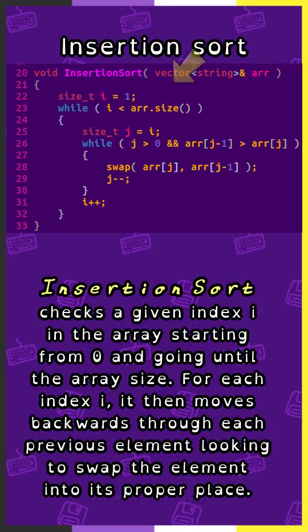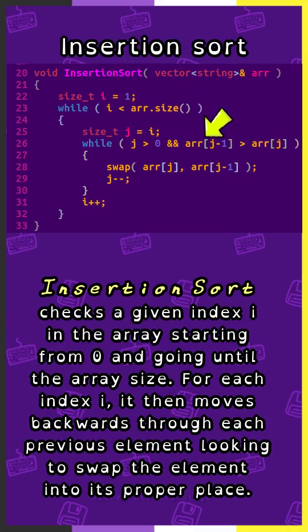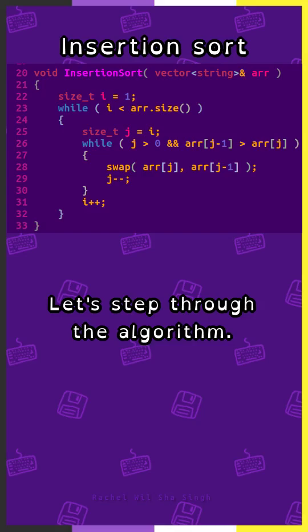InsertionSort checks a given index i in the array, starting from 0 and going until the array size. For each index i, it then moves backwards through each previous element looking to swap the element into its proper place. Let's step through the algorithm.